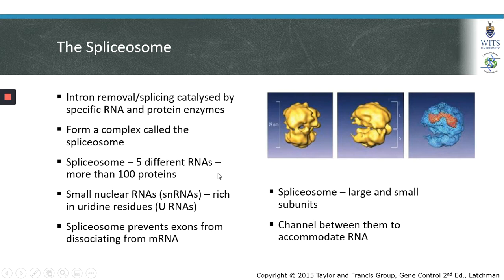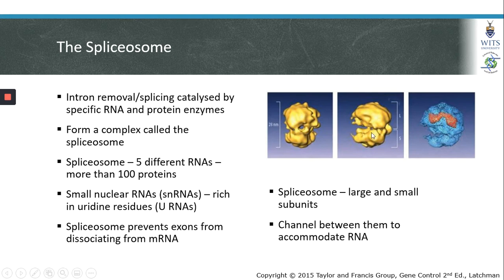The RNAs present in the spliceosome are called small nuclear RNAs and they are rich in uridine residues. The spliceosome prevents exons from dissociating from the mRNA during splicing. It contains two subunits — a large and a small subunit — and if you look at the diagram of a spliceosome, there is a channel in the middle of this complex where the mRNA binds.